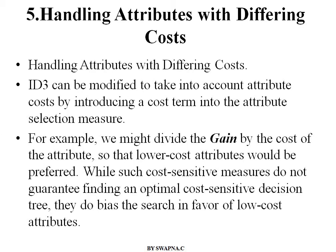The next and last issue is handling attributes with differing costs. ID3 can be modified to take into account attribute costs by introducing a cost term into the attribute selection measure. For example, we might divide the gain by the cost of the attribute so that we get the lower cost attributes. We select the lower cost attribute as the best attribute for that node position.